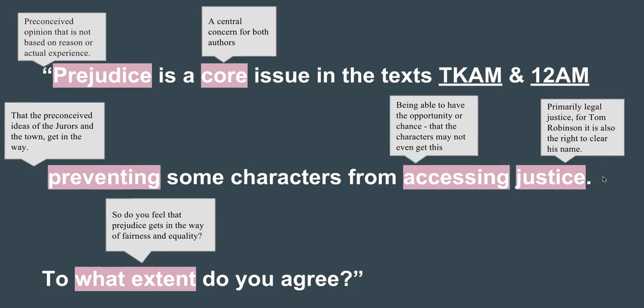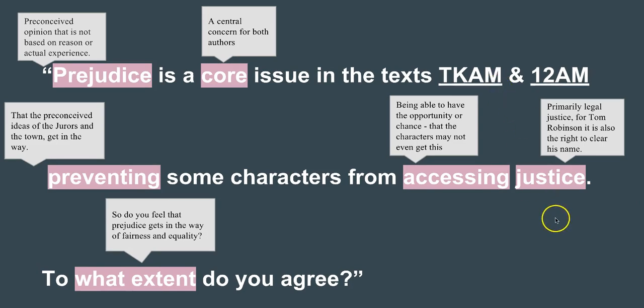We have to be really clear about what legal justice is. For Tom Robinson, legal justice is the right to clear his name. For the accused in 12 Angry Men, legal justice is the right to a fair trial. The question asks 'to what extent,' so you don't have to say prejudice always gets in the way. You can say in some cases more than others. In To Kill a Mockingbird prejudice gets in the way more than in 12 Angry Men, because in 12 Angry Men justice is achieved, whereas in To Kill a Mockingbird it isn't. You can have a difference of opinion between the two.